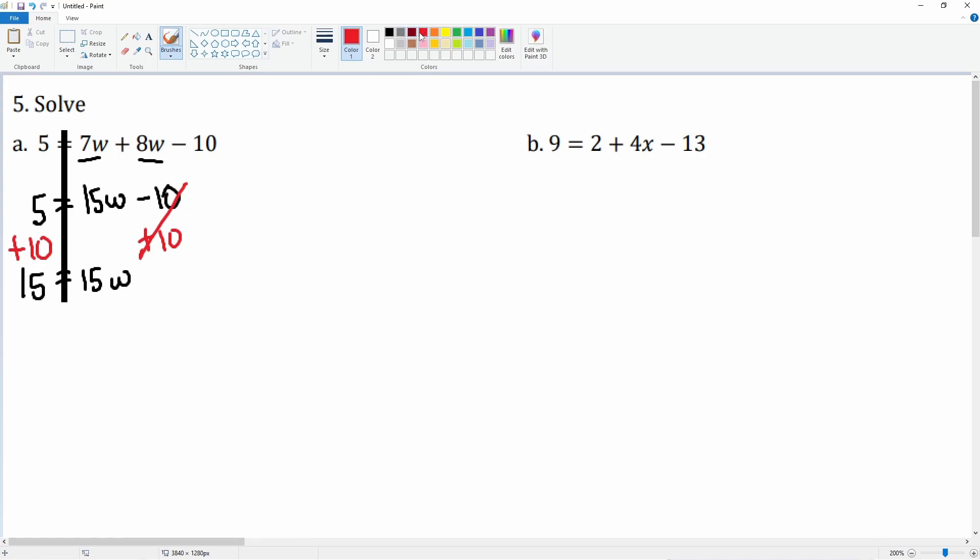That 15 is attached by multiplication, so we're going to divide by 15 on both sides. 15 over 15 cancels, leaving you with 1. So we get w equals 1.